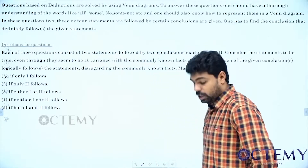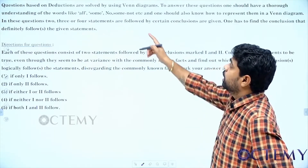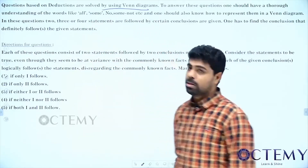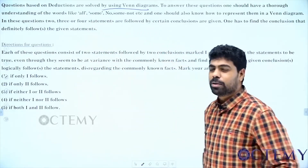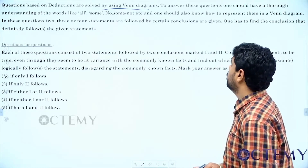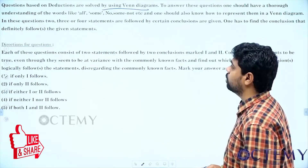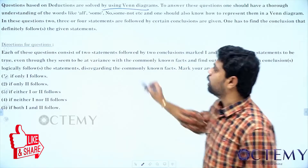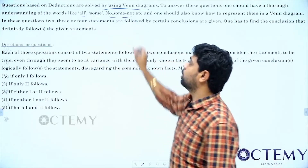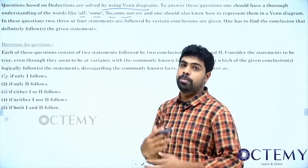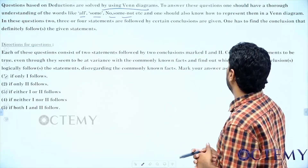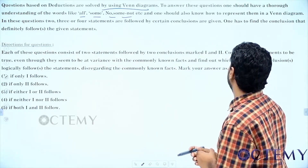Questions based on syllogism are solved using Venn diagrams. There is another way also, but I do not recommend that for the GATE examination. To answer these questions, one should have a thorough understanding of the words: all, some, no, and some not. One should also know how to represent them in Venn diagrams.